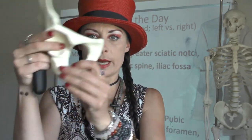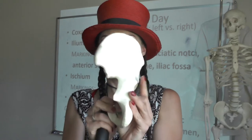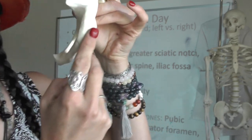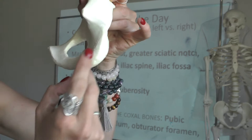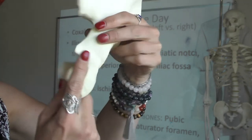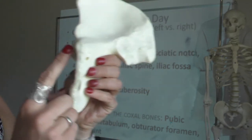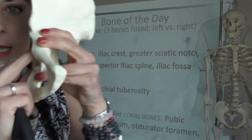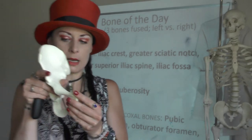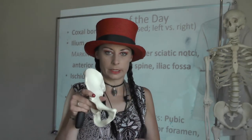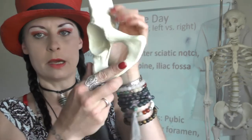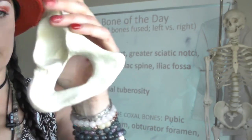If I orient it so the acetabulum goes laterally and I've got this really round region here, but the pointy pubis goes to the back — that's not right. My pointy pubis wants to come to the front and the acetabulum wants to go laterally. So this is a right oscoxa: the ilium is up here, the pubis is in front, and the bone back here is the ischium.